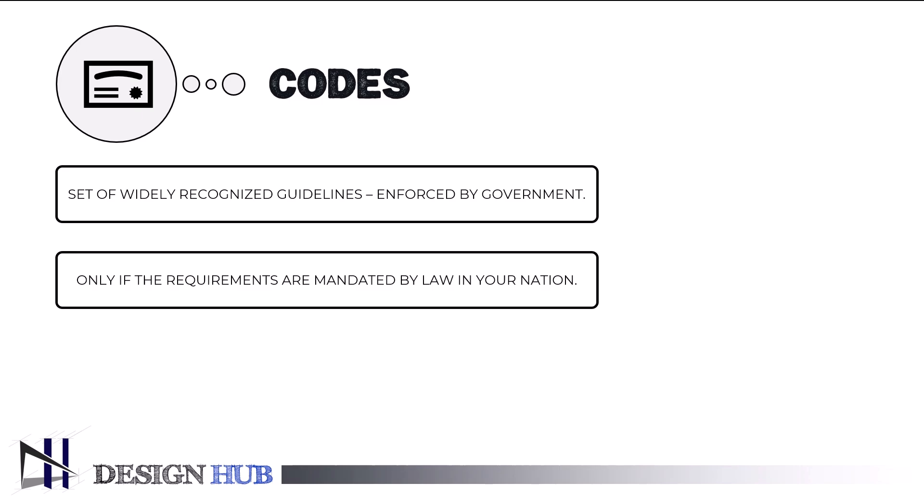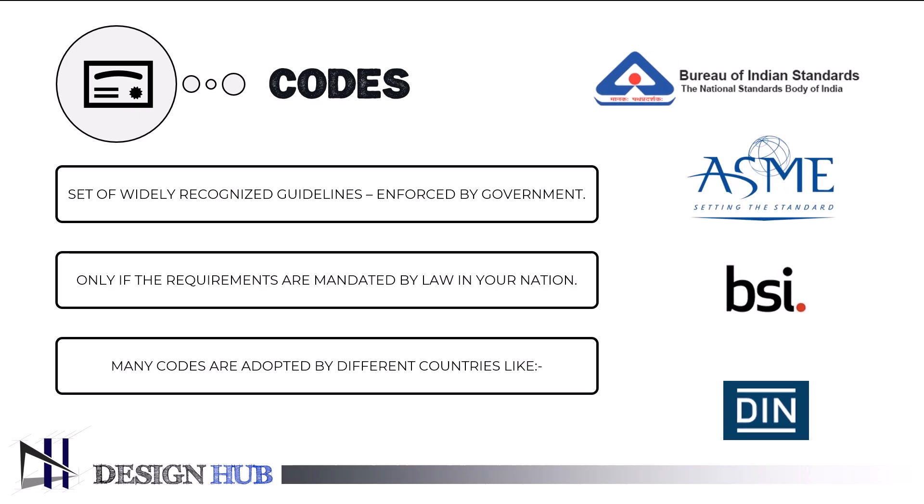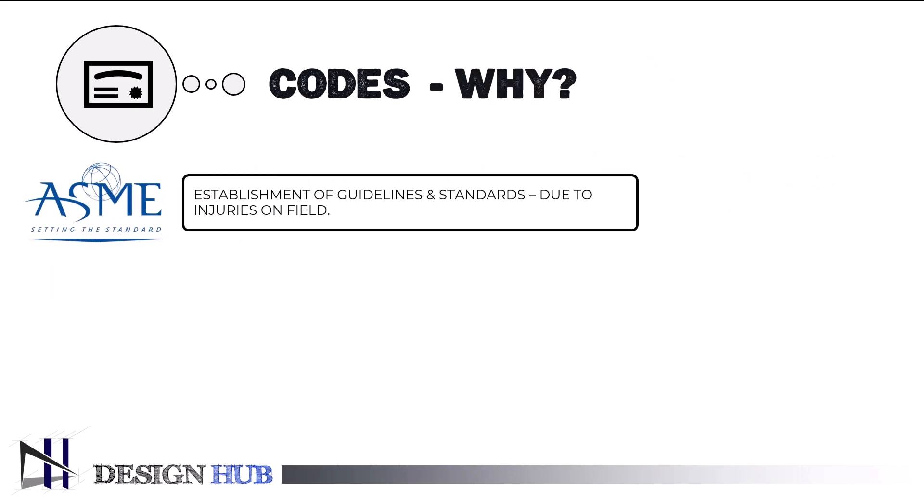Codes are rules or regulations that provide minimum requirements to protect health and safety in the field of mechanical engineering. They are frequently taken from formally published papers known as standards and converted into legislation, government regulations, or legally binding contracts. Codes, standards, and specifications are used in a variety of fields to ensure uniformity, quality, safety, and performance.